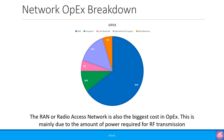When we look at the network OpEx part, RAN is again one of the largest costs. Power consumption is a very big part of RAN OpEx, which increases significantly with 5G. So RAN is 65% of the OpEx, followed by operations and support with 15%, transport with 10%, and core network miscellaneous stuff with 5%.